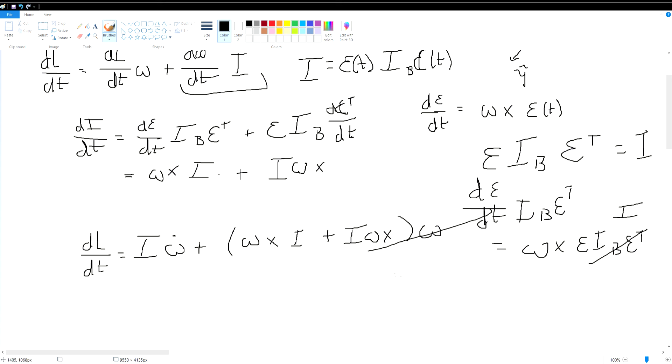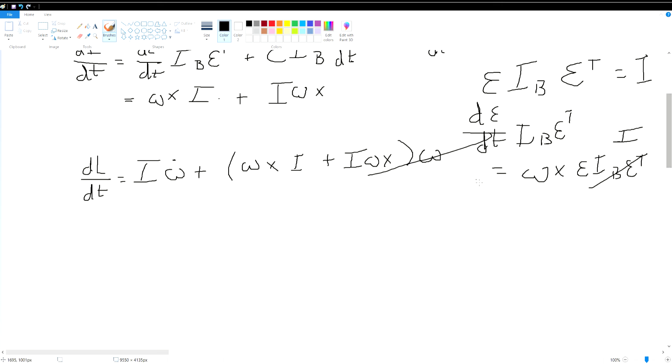this cancels out because any vector cross with itself is zero. So what we are left with is torque with regards or due to angular acceleration and then a cross term due to changes within the body frame of field. And that is the Euler's equation of rotational motion.